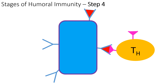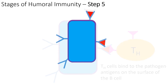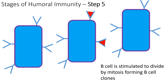In step four, a T helper cell docks with the antigens being presented from the pathogen on the surface of the B cell. In step five, the B cell starts to divide to produce multiple clones — that process is known as mitosis.